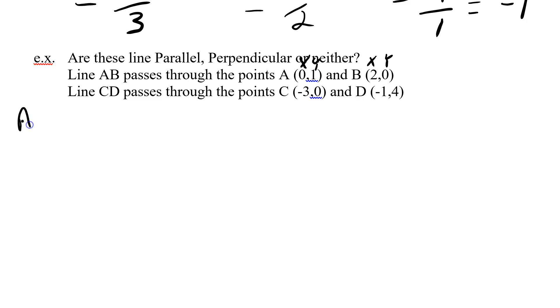Let's do AB. So, formula: y2 minus y1 over x2 minus x1. y2 is 0 minus y1, which is 1, divided by x2, which is 2, minus x1, which is 0. So I get an answer of negative 1 over 2, which of course is negative 1 half.